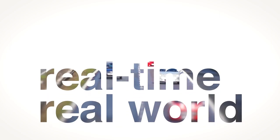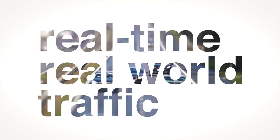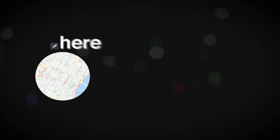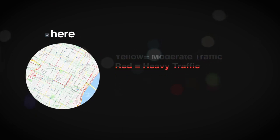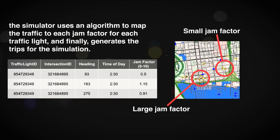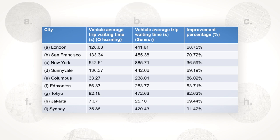We've designed a real-time, real-world traffic simulator which can simulate new machine learning and traffic light control algorithms easily and flexibly. By calling the HERE traffic API, the simulator can get the congestion level for each of the roads connecting to a traffic light. Then the simulator computes the jam factor for each road. We have simulated the Q-learning solution and sensor-based solution for multiple cities including London, San Francisco, New York, Tokyo, and Sydney.